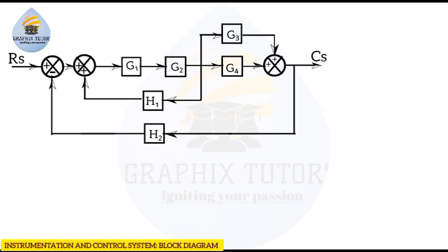You might be wondering why g1 and g2 are multiplying each other. I have proved how you can arrive at this term. Just click on the link at the top right corner of the screen, where I show you how g1 and g2 are in series and why they are multiplying each other.